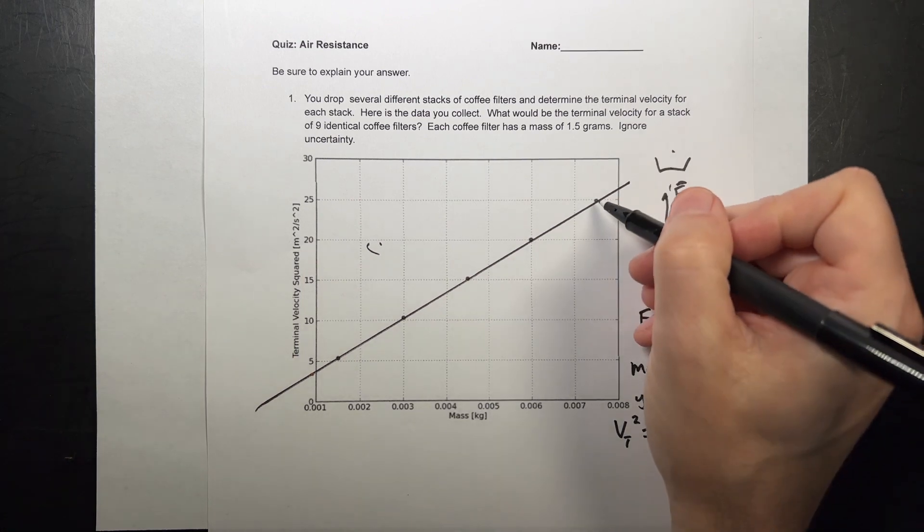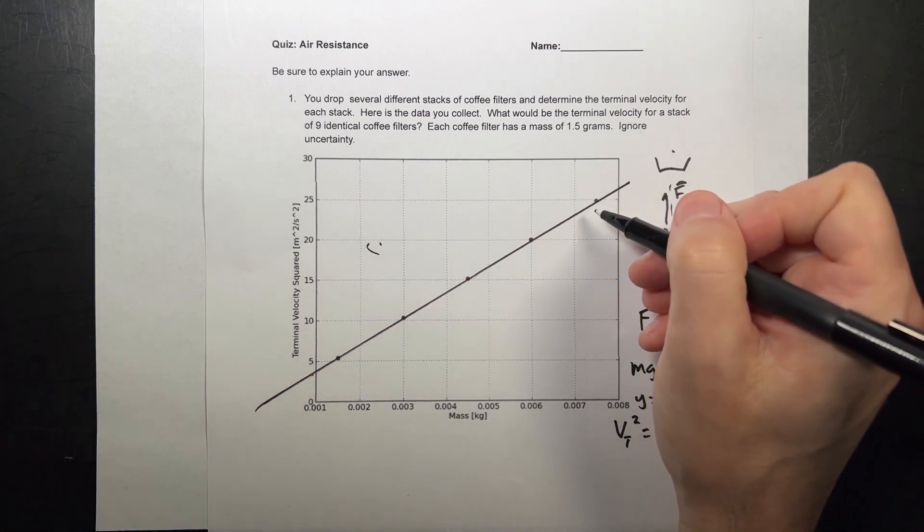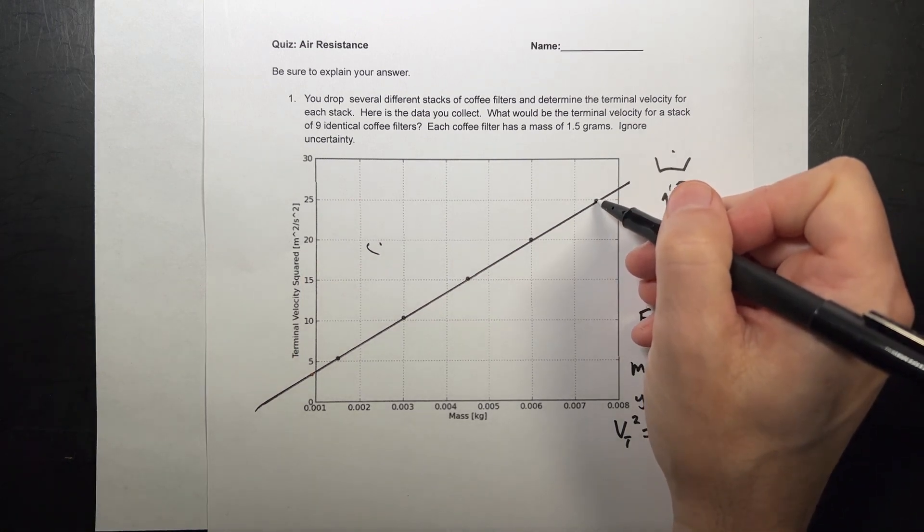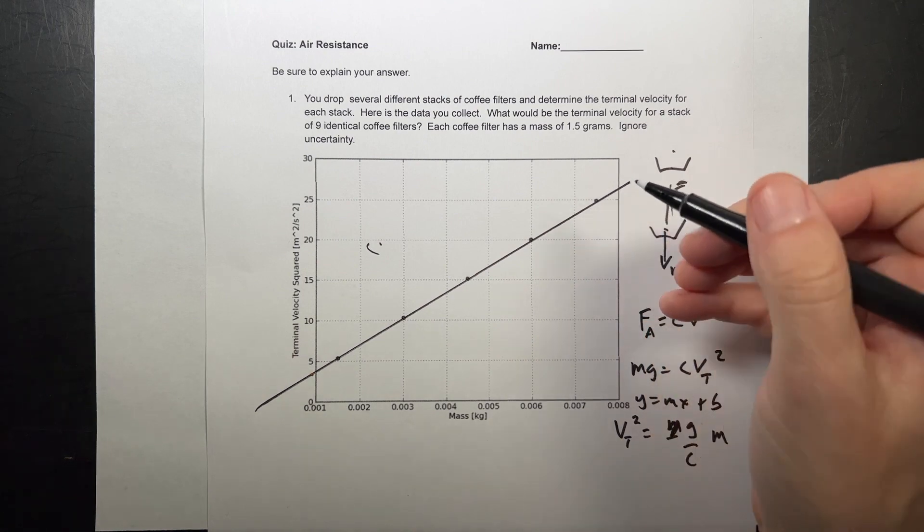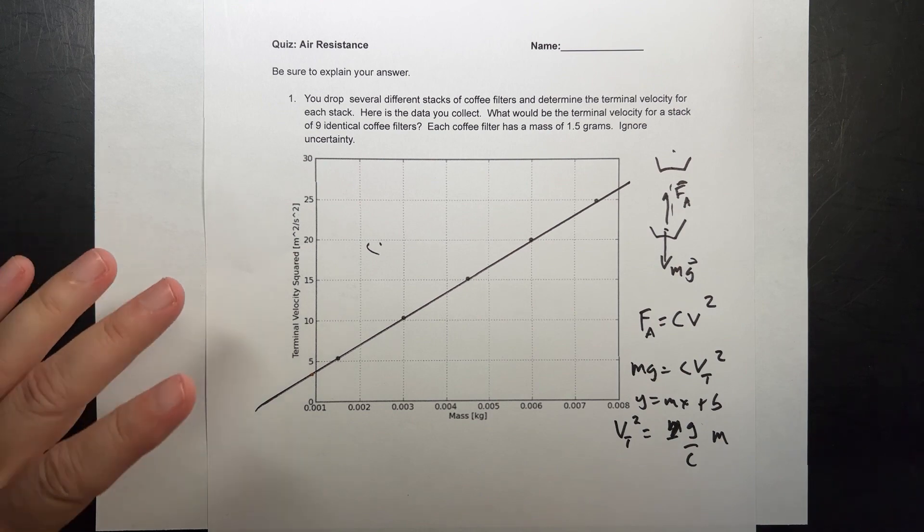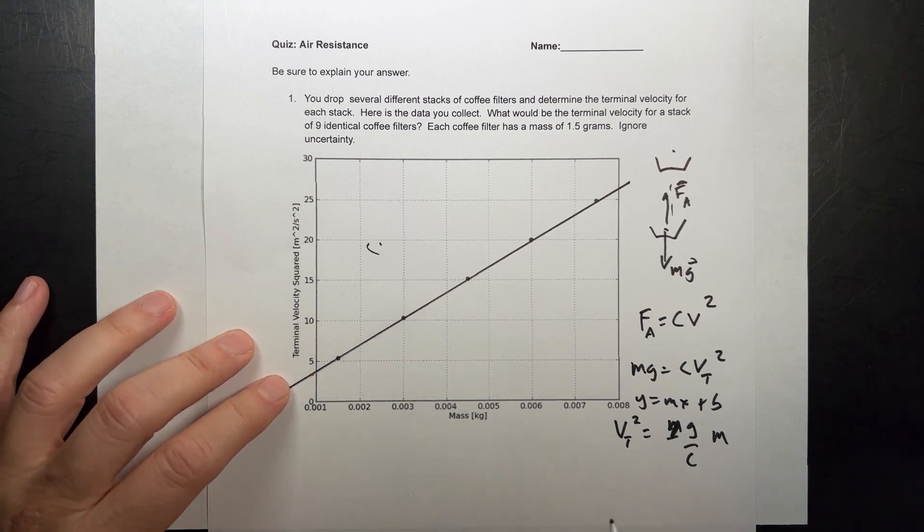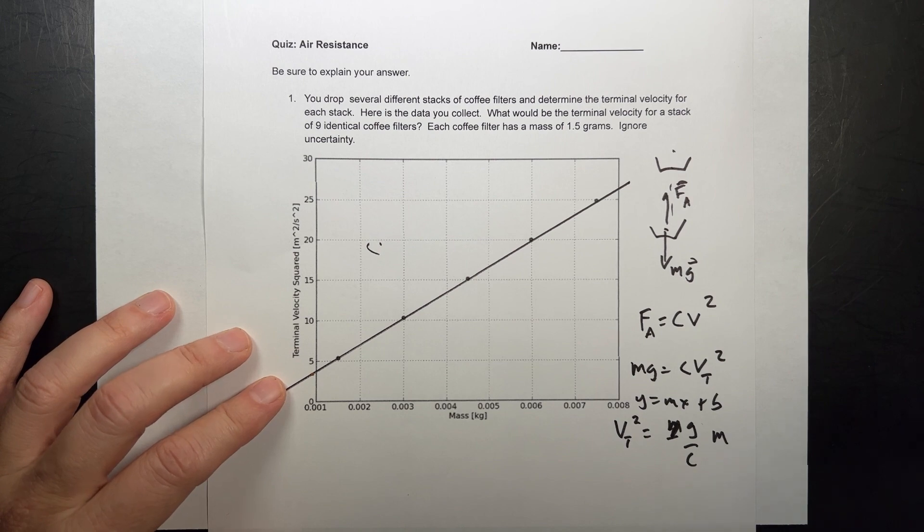You know, you should never do this y value divided by x value, because that only gives you the slope if it goes to the origin. And we shouldn't use the points you used to plot to find the slope. So I'm going to pick some values over here and estimate their x and y values to find the slope.